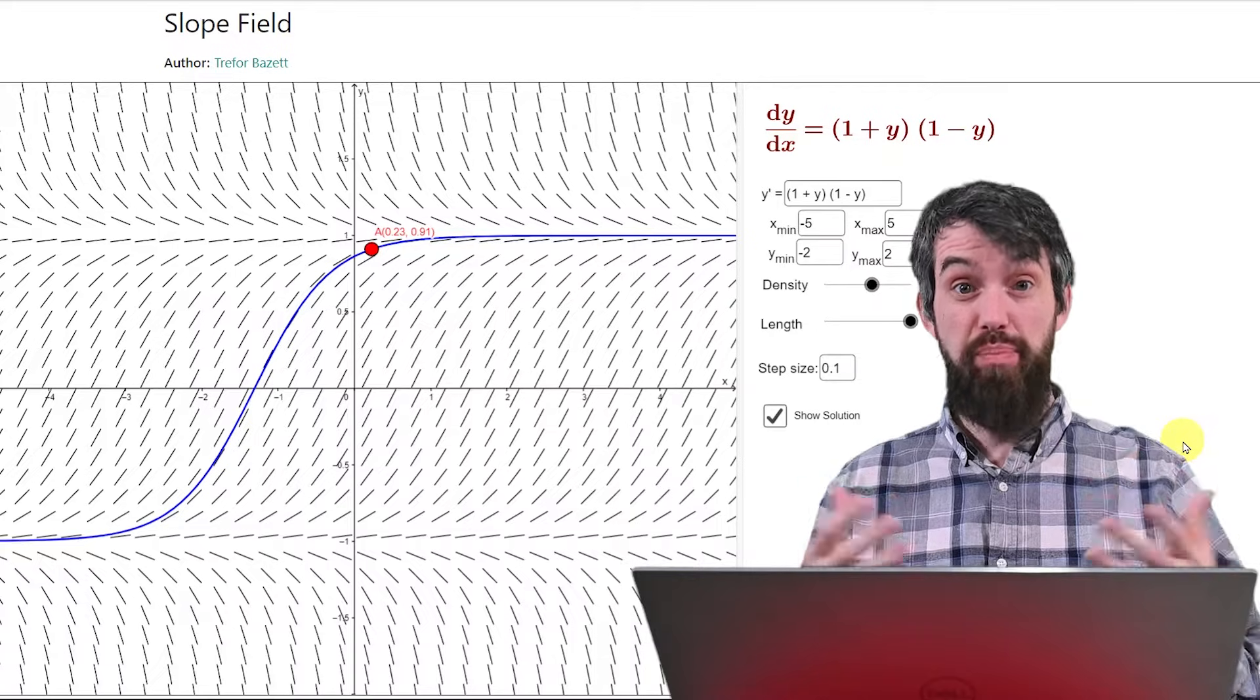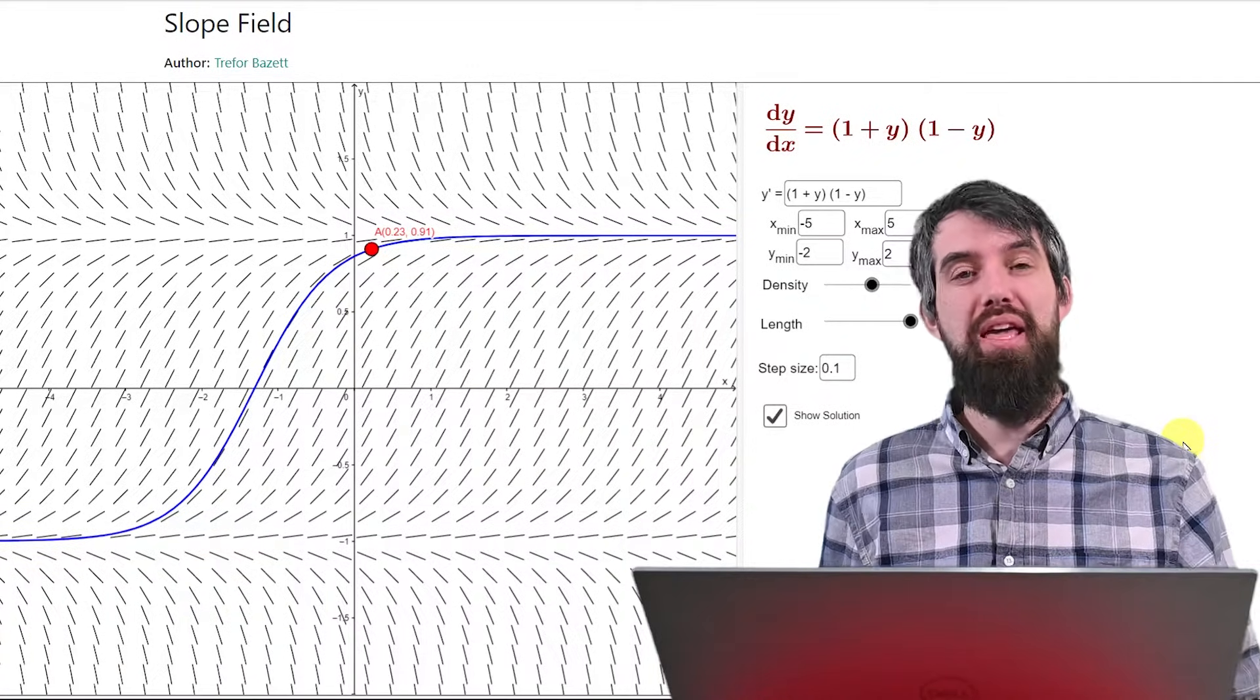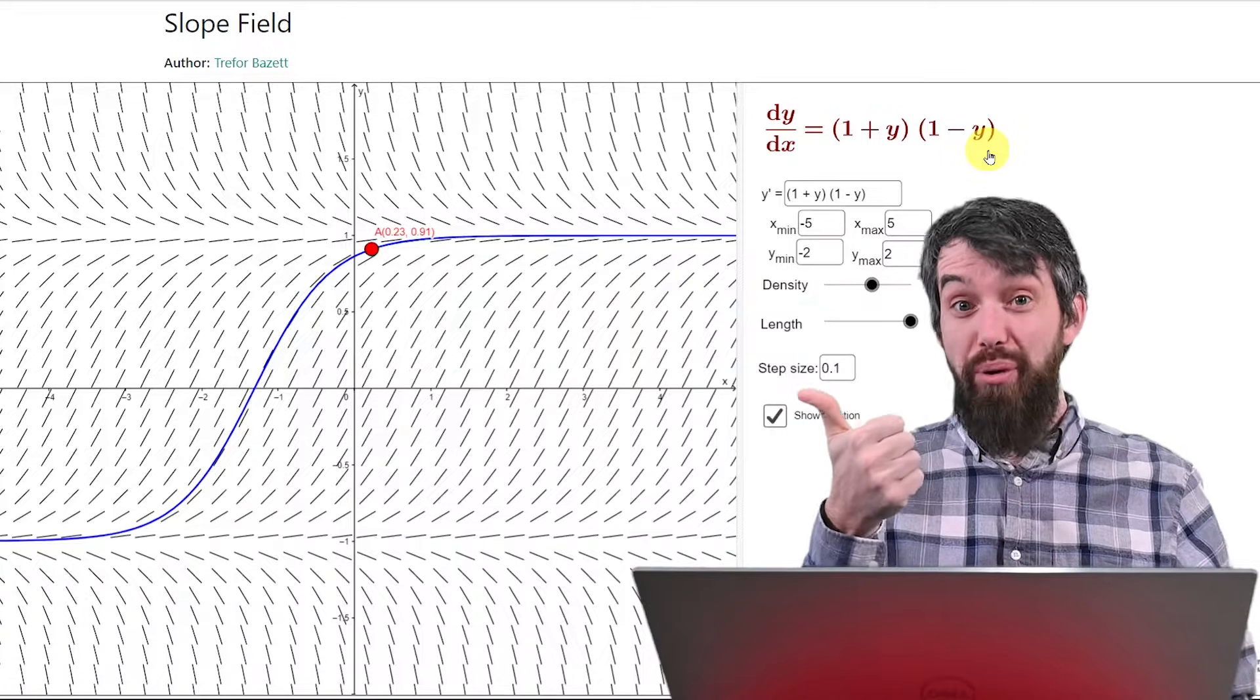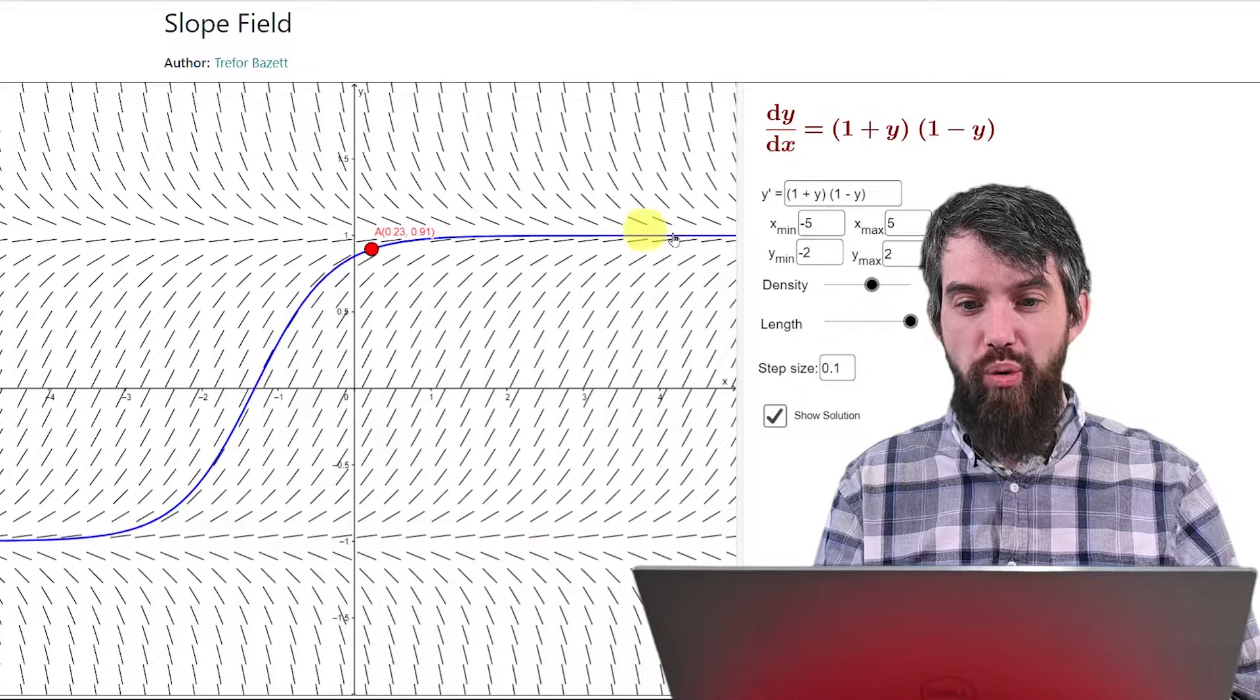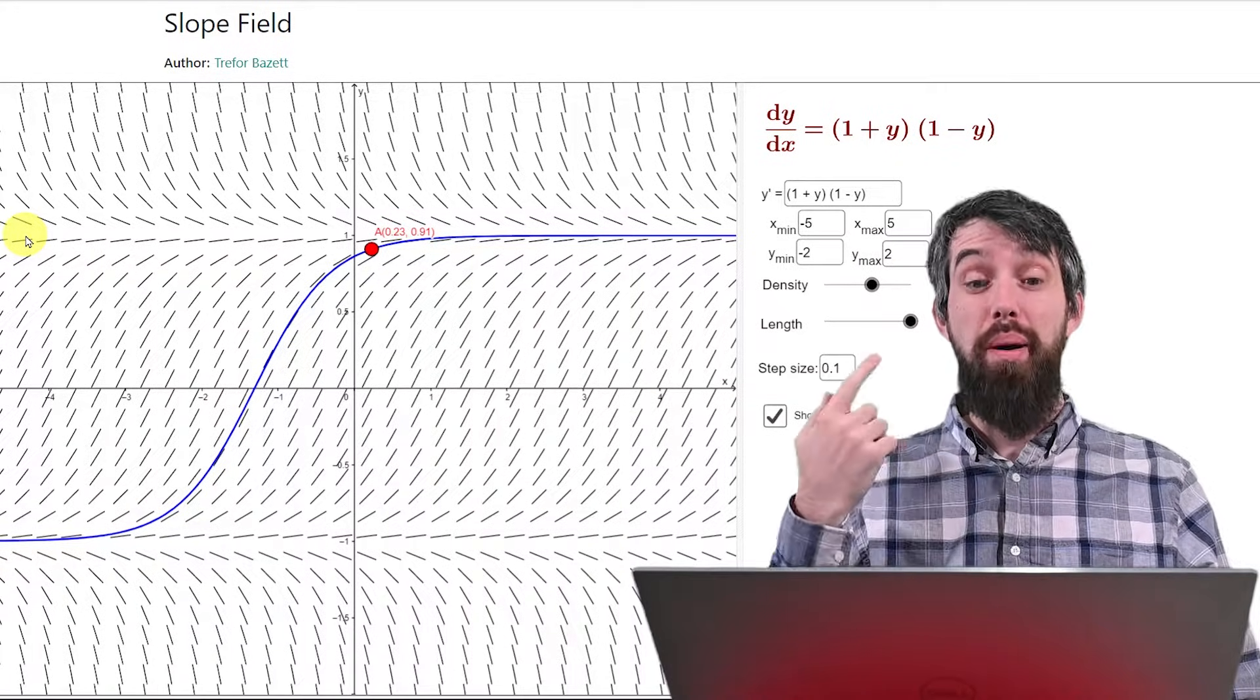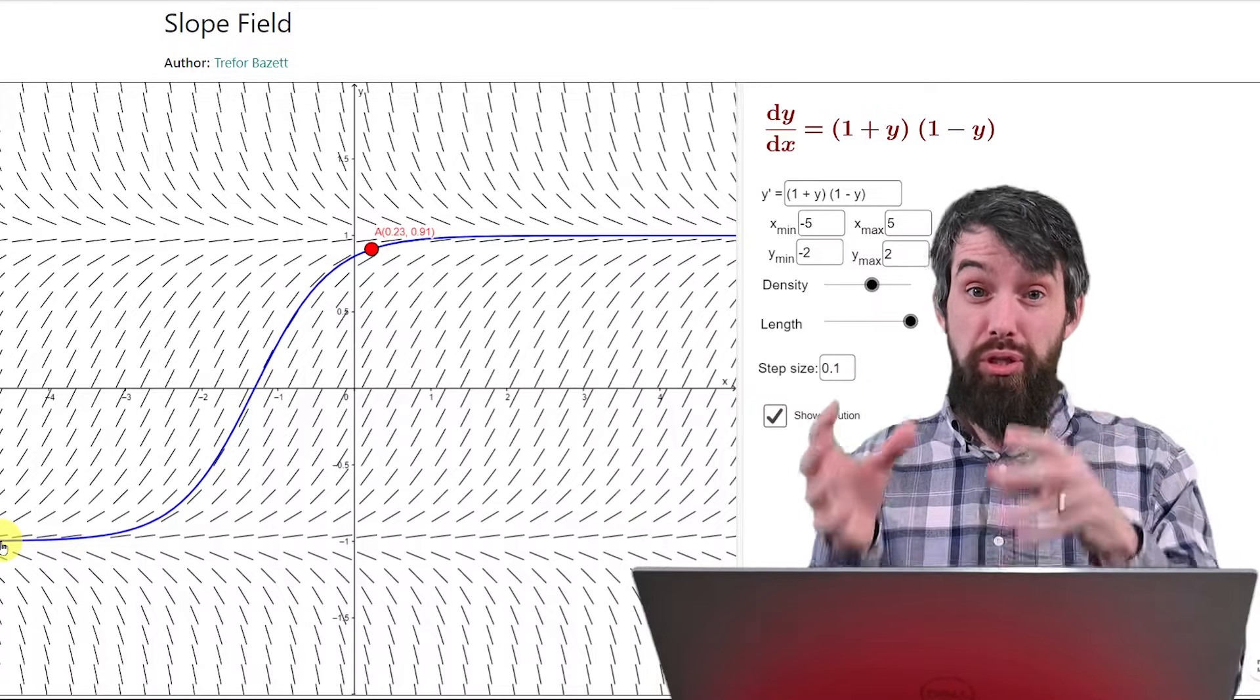So I open up my GeoGebra to plot slope fields, and I plugged in (1 + y)(1 - y) is equal to y prime. And this is the kind of behavior that I get. So I want to notice a few things. First of all, recall that our two spots where the right-hand side was 0 was either y equal to 1 or y equal to -1. And what you'll notice is if you go along the line y equal to 1 up here, it's where the derivative is 0. And if it plotted at that exact point, you get horizontal lines. And y is equal to -1, that's down here at -1, it's going to similarly be this horizontal line. And so these are what we call equilibrium solutions.